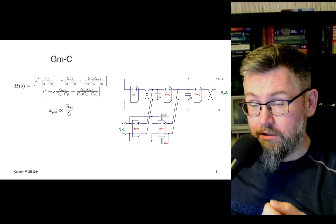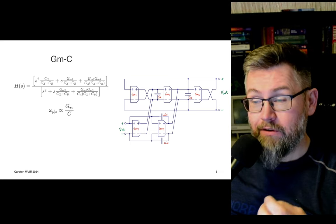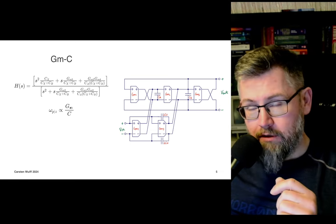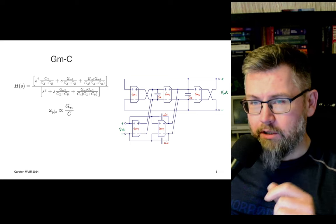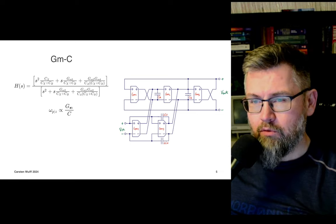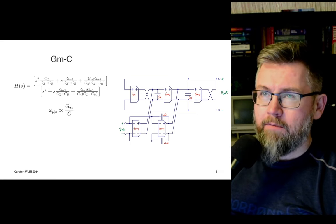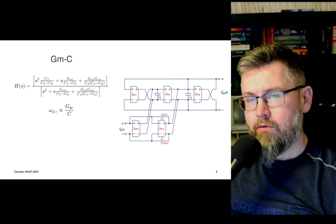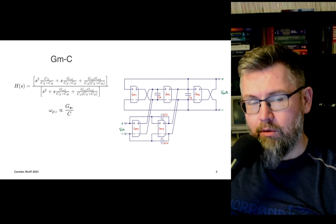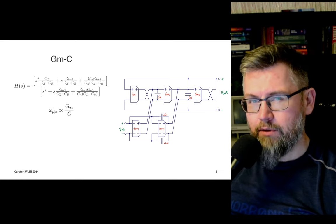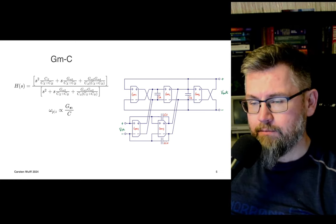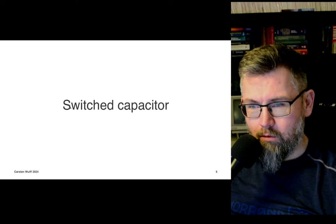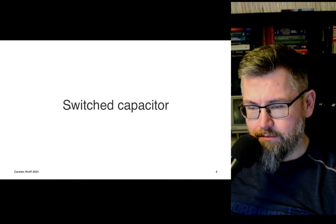It's hard to generate accurate gain with those approaches. But there is a circuit where it's possible to make very accurate pole and zero frequencies and very accurate gain, and they are called switch capacitor circuits.